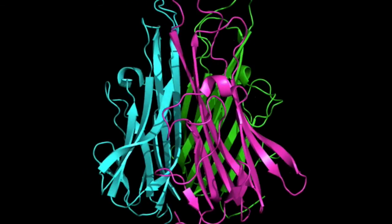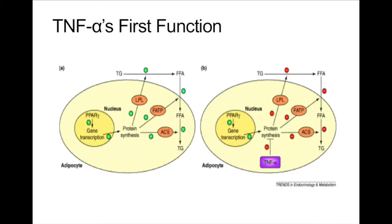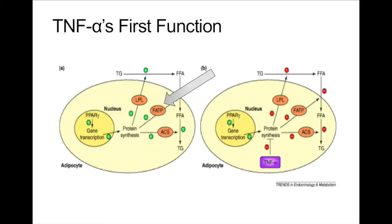Many researchers have speculated that TNF-alpha is a key contributor to insulin resistance because it has 3 important functions. Normal adipocytes are able to synthesize specific proteins that allow them to store fatty acids like triglycerides when a signal reaches the nuclear receptor. Lipoprotein lipase, for example, is secreted from the adipocyte and acts on triglycerides in the neighboring regions, thereby forcing them to release free fatty acids. These free fatty acids are then transferred through the plasma membrane and into the cell by a fatty acid transport protein, where they are then converted back to triglycerides with the help of acetyl-CoA synthase.